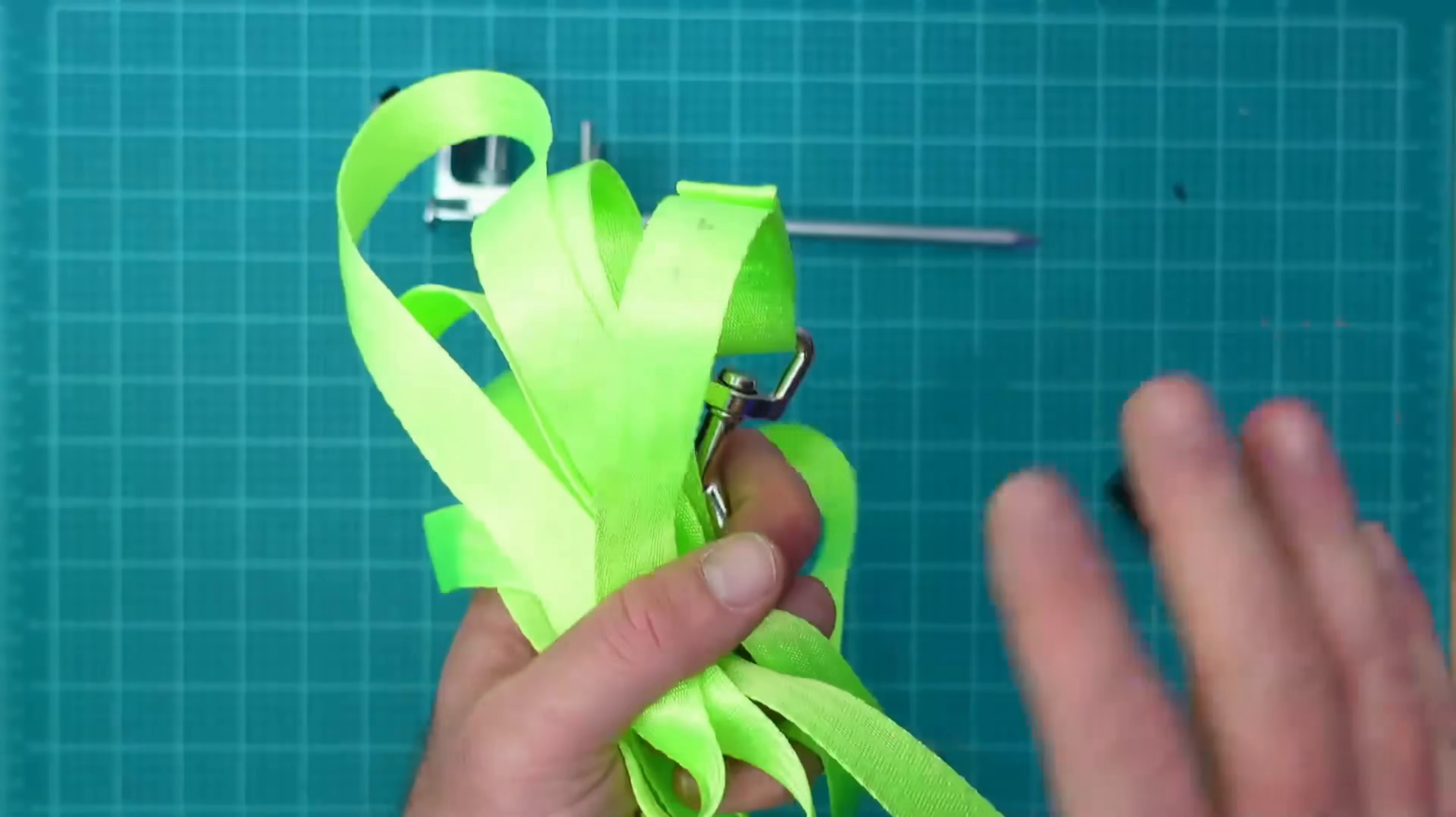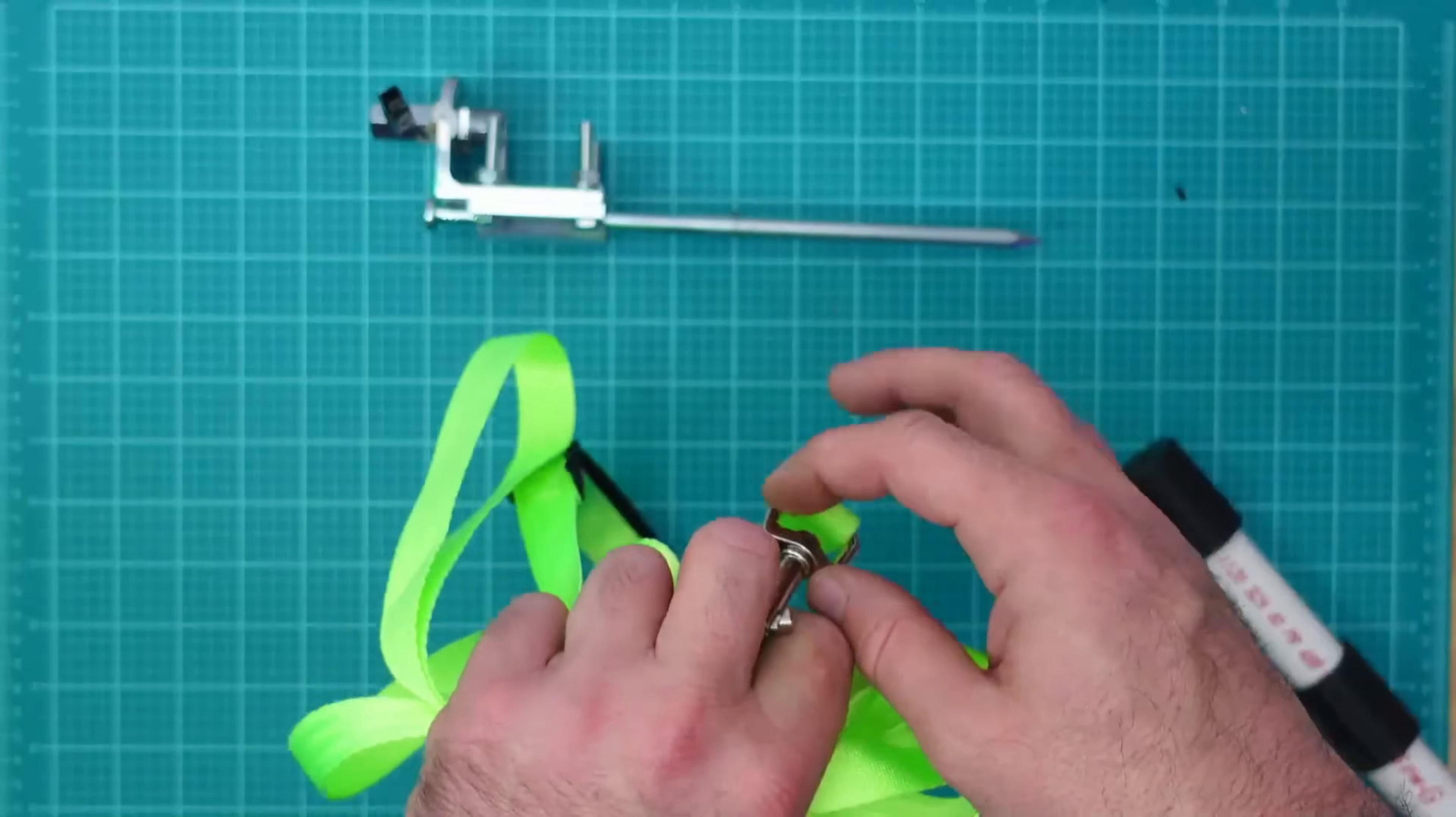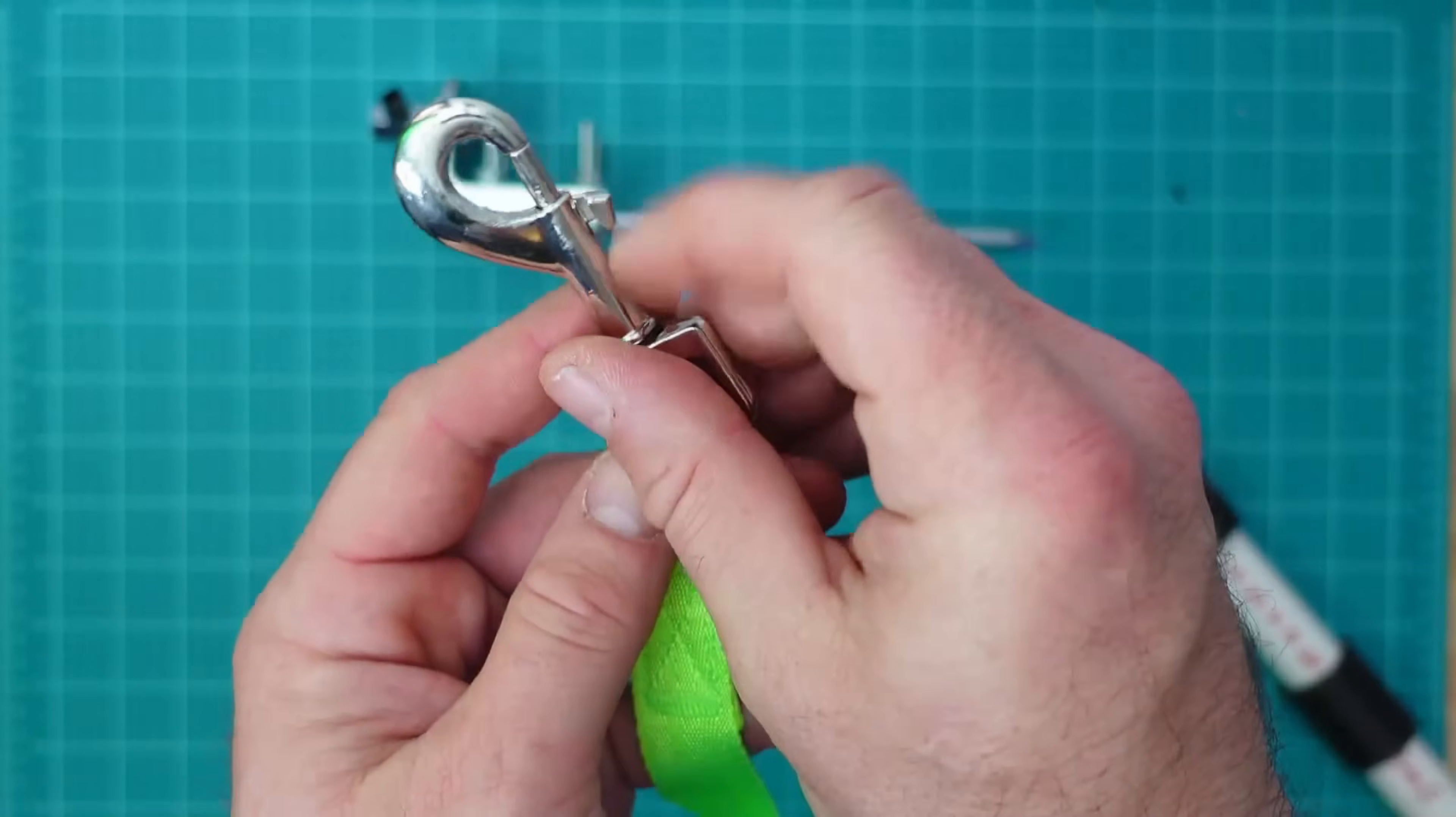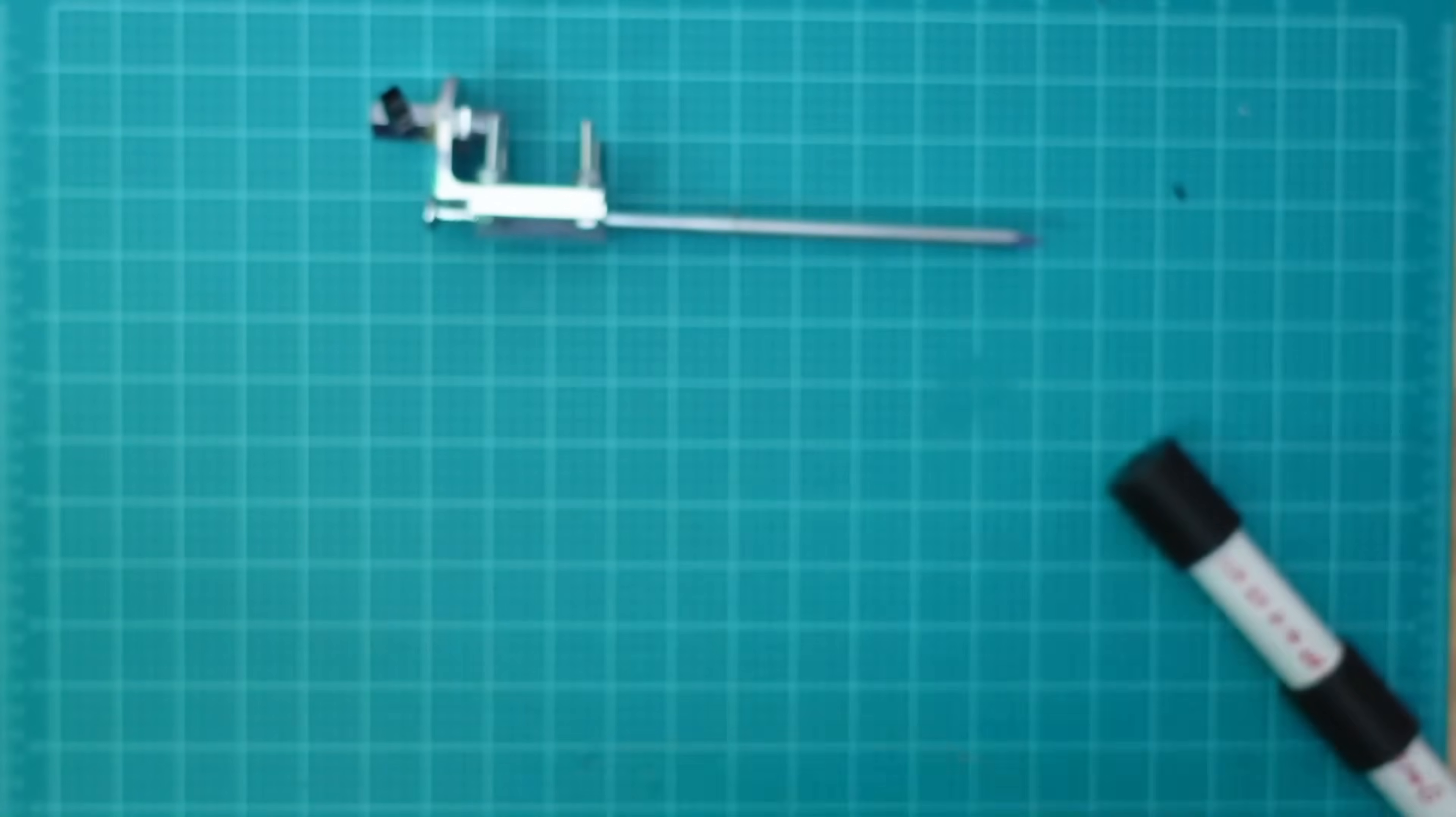Now, don't buy a dog lead just yet because by the end of the episode, you might decide you want a longer leash and you'll understand why. Basically, I have a dog leash with two ends. I have the leash end that goes onto my dog's collar and I have the end that I hold.